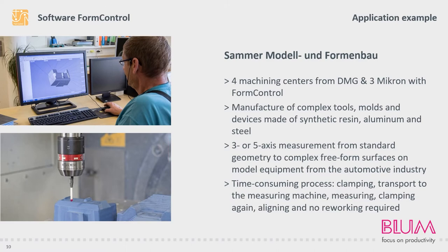One major advantage is that the workpieces can be measured while they are still in the original clamping in the processing center. This saves a lot of time since the workpieces can be reworked immediately if necessary. The following time-consuming steps are avoided: unclamping, transport to the measuring machine, measuring, clamping again, aligning, and reworking.